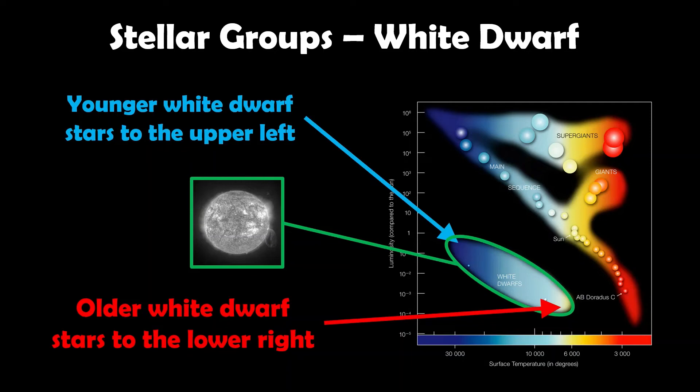What that means is younger white dwarfs, ones that haven't been formed for very long, are on the upper left. As they age, their surface temperature decreases and they naturally become less luminous. So they move down to the lower right in that particular group. They sit down there because they're small, very small radius, even though they have very high surface temperatures. Surface temperature-wise, they're comparable to some of the larger stars we have, but because they're very small, they have very low luminosity.